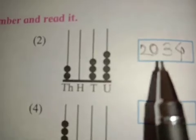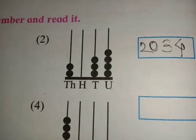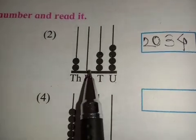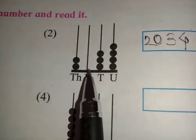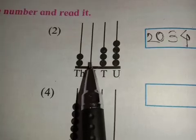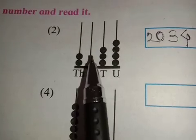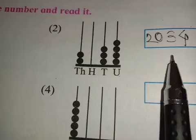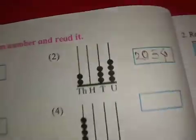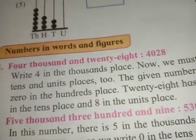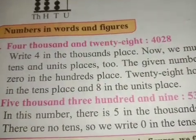So we will write this number as two thousand and thirty-four. The hundreds place has no point, meaning it has a zero digit. So we write it like this.